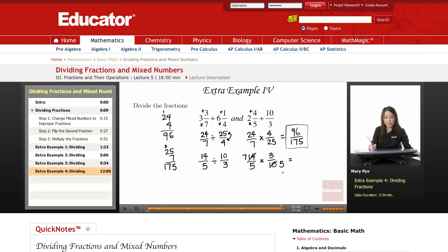So 7 and 5, they have no common factors, so then I can go ahead and multiply them. 7 times 3, 21. 5 times 5 is 25, and that is your answer.